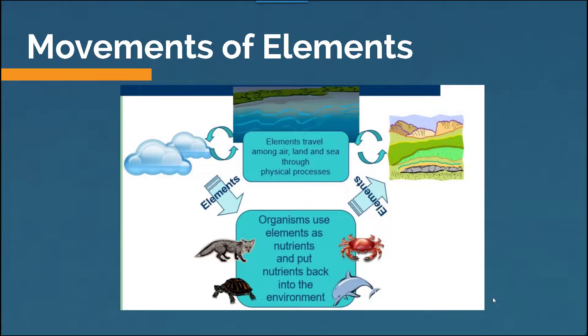The elements will often travel among the air, land, and sea through physical processes, and as they get incorporated into their new environments, the elements will be used by organisms in the ocean or on land, who will then put nutrients back into the environment. So there's a cyclical relationship between the elements responsible for organisms being able to survive and the organisms contributing back to the environment after using those certain elements and nutrients.